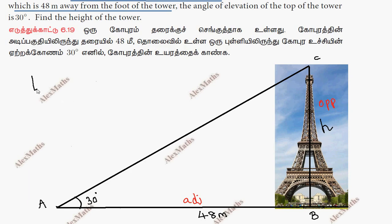Tan 30. This formula is opposite side by adjacent side. Opposite side h, adjacent is 48. Tan 30 is 1 by root 3. This is equal to h by 48.